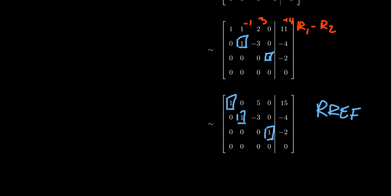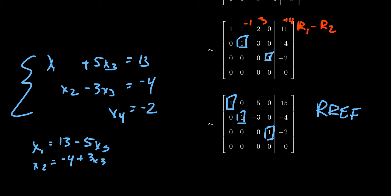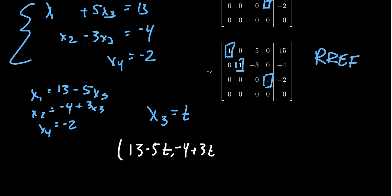This matrix is now in row reduced echelon form — the RREF. Reading the solution as a system of equations: x1 plus 5x3 equals 15; x2 minus 3x3 equals negative 4; and x4 equals negative 2. Solving dependent variables with respect to the free variable x3: x1 equals 15 minus 5x3, x2 equals negative 4 plus 3x3, and x4 always equals negative 2. Setting x3 equal to a parameter t, the general solution is (15 minus 5t, negative 4 plus 3t, t, negative 2).